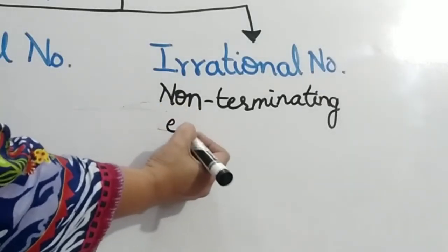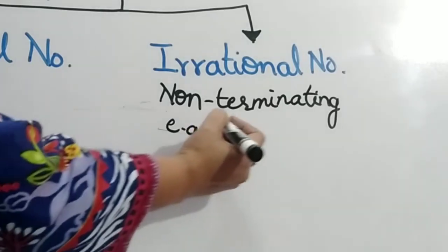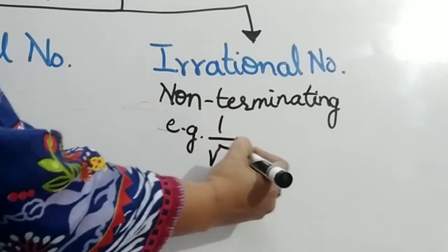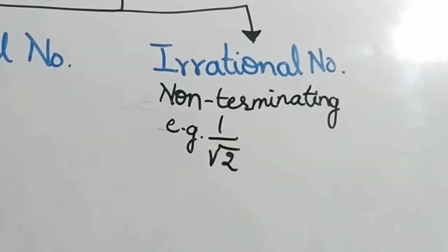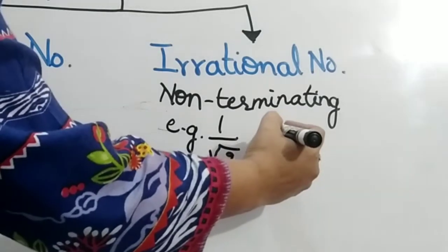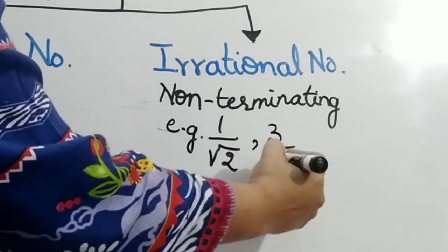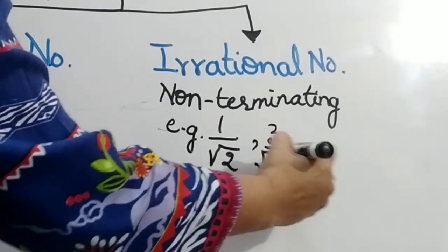Example: 1 upon root 2, 3 upon root 5, pi.